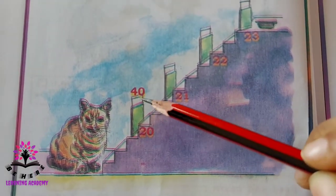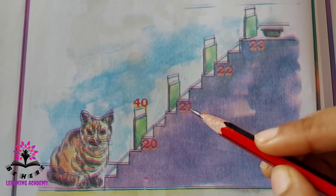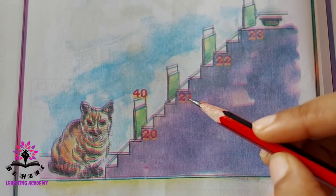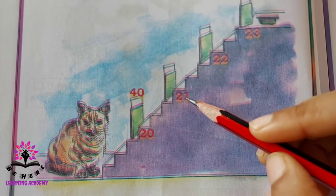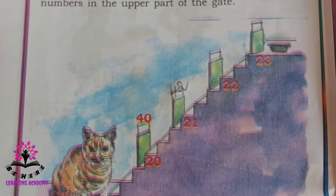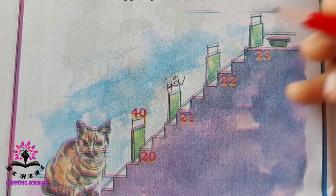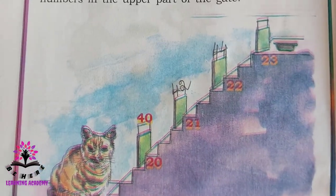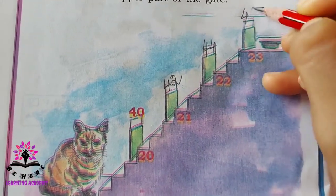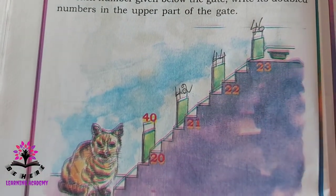Now 20 is given, it is doubled, it is 40. Next is 21, to double this number either you can multiply by 2 or add 21 plus 21, what's the answer? 21 plus 21 is 42. Next you see here 22, 22 is easy to double, 22 into 2 that is 44. Next one 23, when we double 23 it is 46. So now the cat can go up and drink the milk.